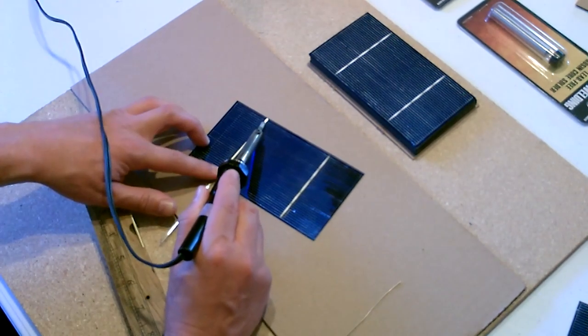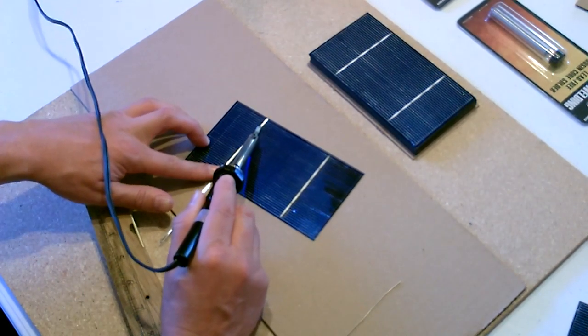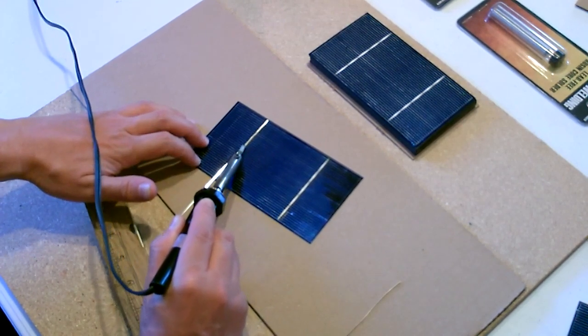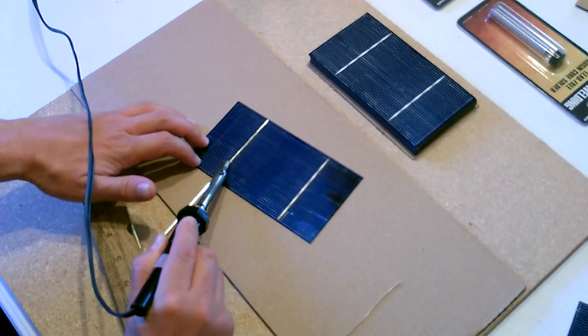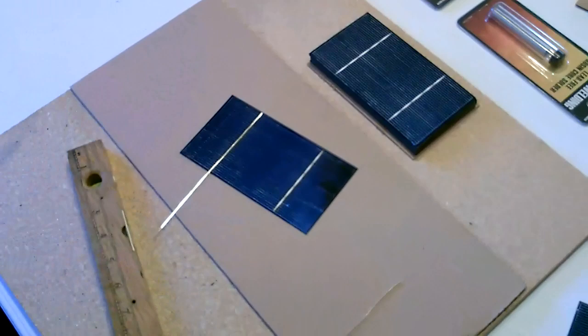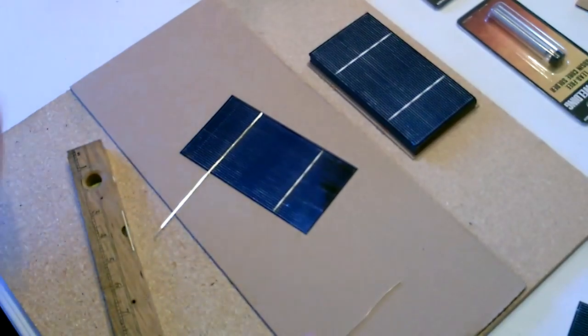Now just use the soldering iron and fix the tabbing wire right to the front of the panel. That's it. It's just as easy as that.